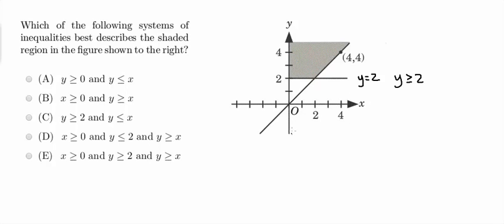Similarly, for the x values, we have this line here, which is x equals 0. And everything to the right of that, or the greater y values, I'm sorry, x values, are also shaded. So that again tells us that x has to be greater than or equal to 0.